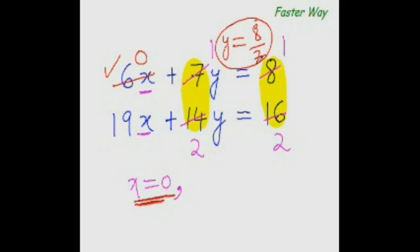Tell me, wasn't that fast? Once again, let me repeat: when the ratio of the coefficients of y is equal to the ratio of the constants, then x equal to 0.